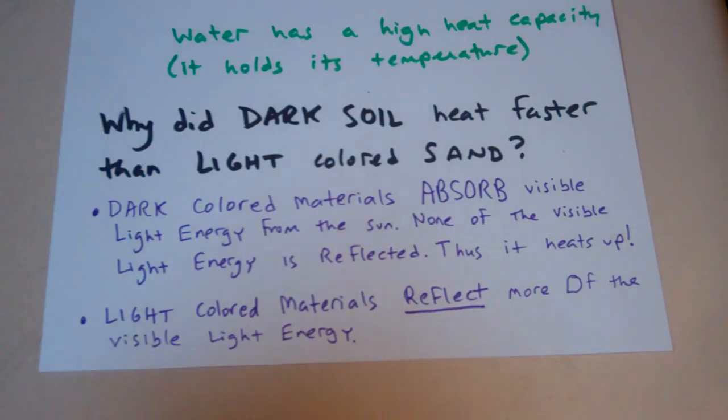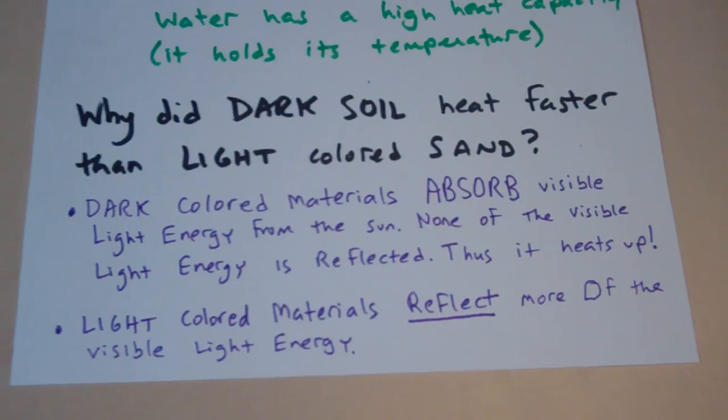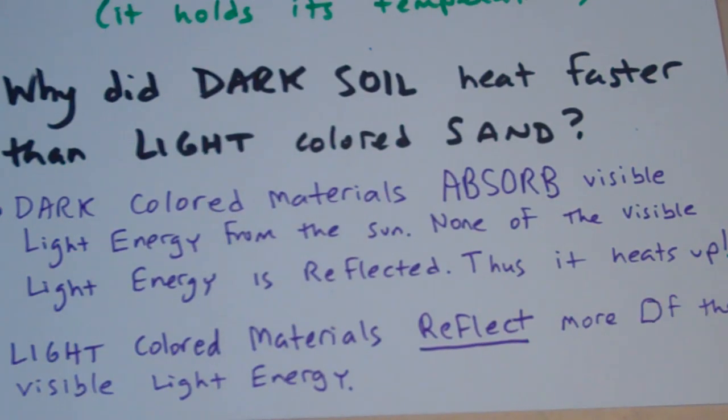Dark colored materials absorb visible light energy. Dark colored materials absorb visible light energy from the sun. None of the visible light energy is reflected when you're wearing something black, and thus it heats up quite a bit. If you're wearing something like white, a light colored material like white, it's going to reflect more of the visible light energy and it heats up less.